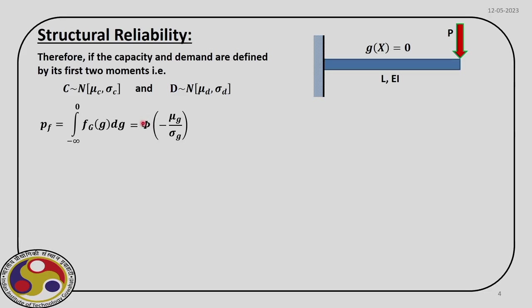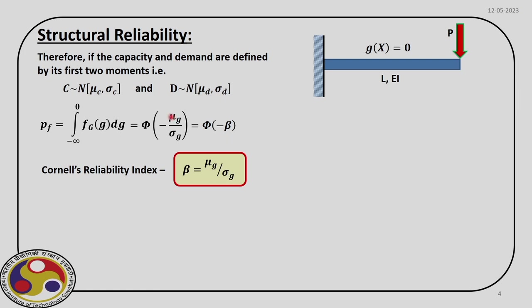For the standard normal CDF defined by Φ, evaluating from minus infinity to 0 gives us 0 minus μg divided by σg, which equals minus μg/σg. Since μg and σg have the same units, this is a non-dimensional number. We define the probability of failure as Φ(−β), where β is this non-dimensional number — the ratio of mean to standard deviation. This was first proposed by Cornell and is therefore called Cornell's Reliability Index. In deterministic design we use factor of safety; here we use the Reliability Index β.